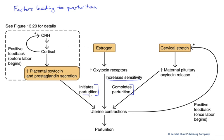Let's start on the left with initiating parturition. The initiating hormone is CRH, corticotropin-releasing hormone, coming from the placenta. Normally we think of this as a hypothalamic hormone, but in this case it's being released by the placenta, and it's going to act in both the maternal and fetal systems to stimulate the production of adrenocorticotropic hormone, ACTH, from the anterior pituitary. That will act on the adrenal cortex to release cortisol in both the maternal and fetal systems.